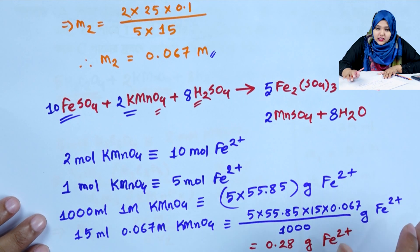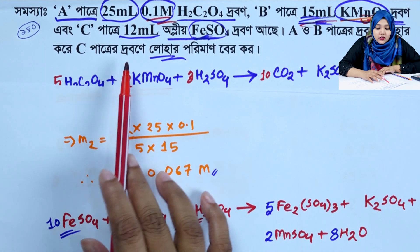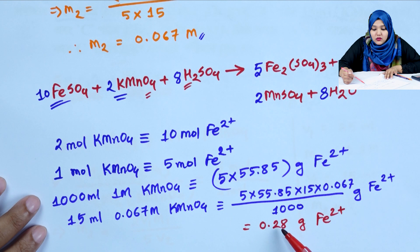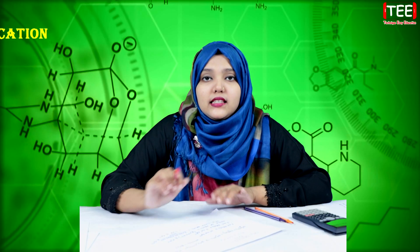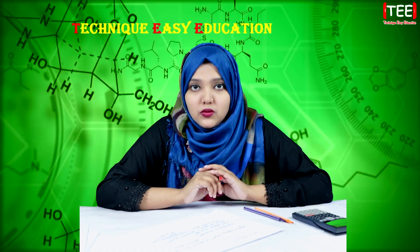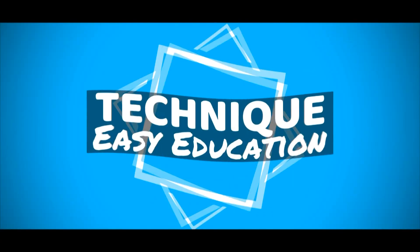So the final answer is: 15 mL of potassium permanganate solution corresponds to 0.28 grams of ferrous iron.